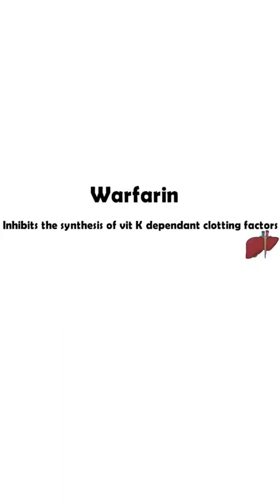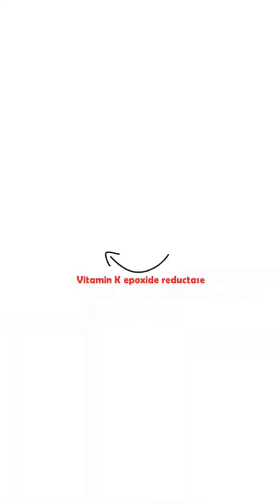Warfarin inhibits the synthesis of vitamin K dependent clotting factors from the liver, and these factors are basically clotting factor 2, 7, 9, and 10. Warfarin mainly acts by inhibiting an enzyme known as vitamin K epoxide reductase. This enzyme is helpful in the conversion of vitamin K epoxide to another form called vitamin K hydroquinone.